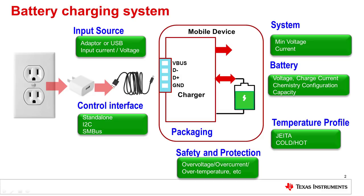The charger provides a system voltage — usually a minimum voltage to make sure that the system doesn't collapse — as well as current or power to the system, and also regulates the voltage and provides charge current to the battery. The charger also ensures that the battery isn't charged outside of a certain temperature profile, and provides safety and protection in the form of preventing over voltage, over current, and over temperature.